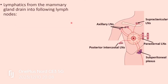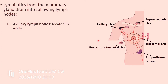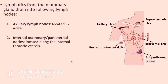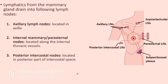Lymphatics from the mammary gland drain into the following lymph nodes. The most important group is the axillary lymph nodes, located in the axilla — there are five groups, which we will look at shortly. Second are the internal mammary or parasternal lymph nodes, located just lateral to the sternum along the internal thoracic vessels.